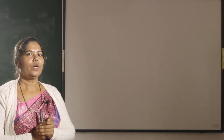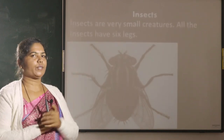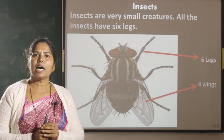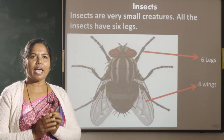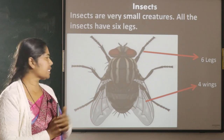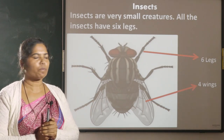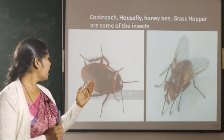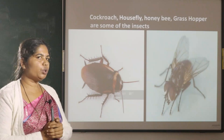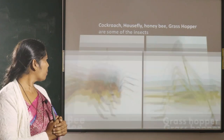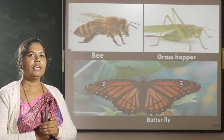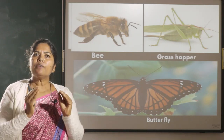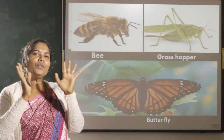Now let us move to insects. Insects are small creatures. They have six legs and four wings. Some of the insects are cockroach, house fly, bee, grasshopper, butterfly. Butterflies are so beautiful insects.